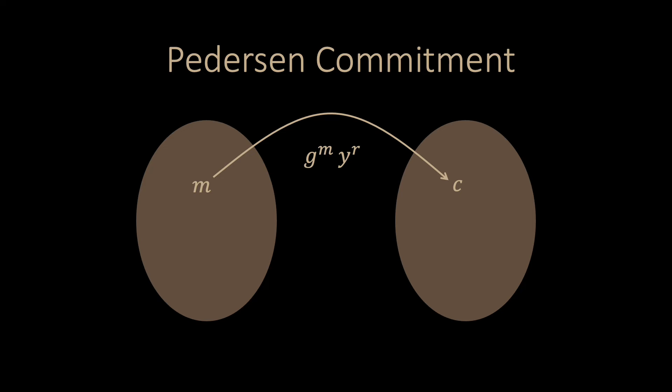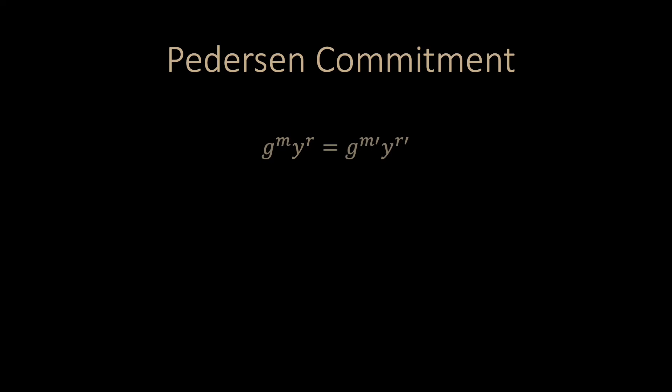The protocol is however only computationally binding. This can be shown by a reduction. One can show that changing the commitment is just as hard as computing the discrete logarithm of y. Why is that the case? Say we have value m, m prime, r, and r prime, such that this equation holds.